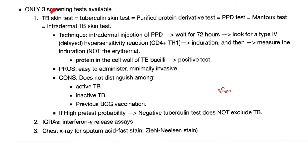We have three screening tests available. Number one, the TB skin test — also called the tuberculin skin test, the purified protein derivative or PPD test, the Mantoux test, or intradermal TB skin test. The technique is to inject five units of the PPD into the patient's skin, wait about 72 hours — two to three days — until the delayed hypersensitivity reaction takes place. When you feel an induration in the patient's skin, you're feeling a granuloma. We don't care about the redness; we care about the induration. If you find a big induration, it's a positive test.